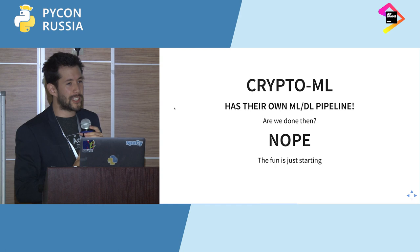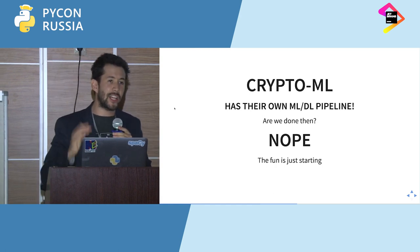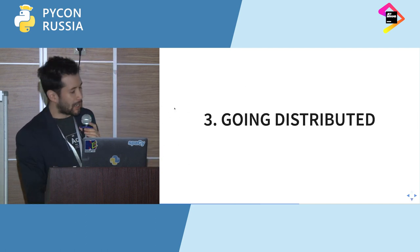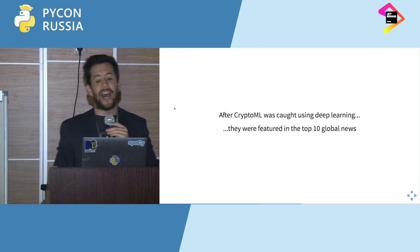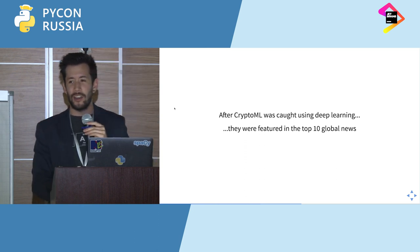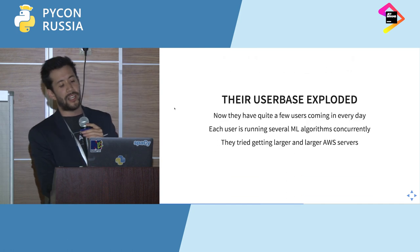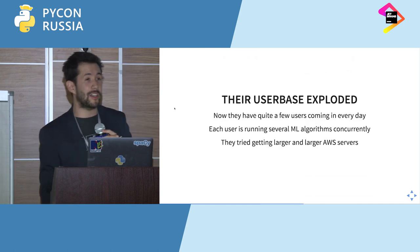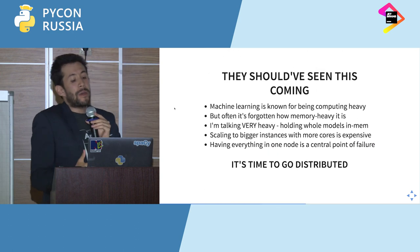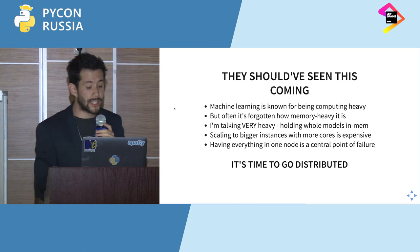We're not going to worry about that right now because we're in the crypto space and need to move fast. Now that the CryptoML guys created their deep learning pipeline, are we done? Not yet. We're going to go distributed. The CryptoML guys were featured in the top 10 global news on TechCrunch, the user base exploded, and their infrastructure is barely coping. Machine learning is known for being very compute heavy — and often it's forgotten how memory heavy it is too.